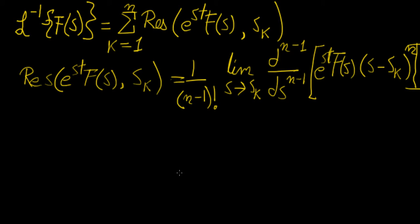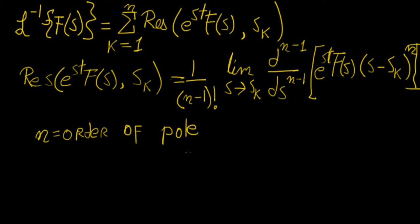This looks like a very intimidating formula, but I'm going to explain what each of these terms means. n is the order of the pole. A pole in complex analysis is essentially whenever you have a fraction of functions — some function with a polynomial in the denominator — a pole is a point at which the denominator becomes zero.